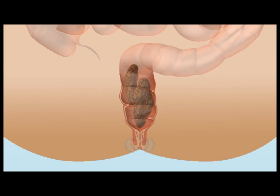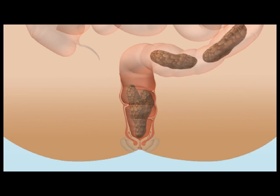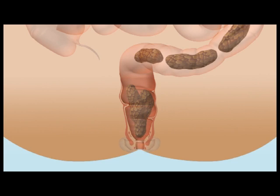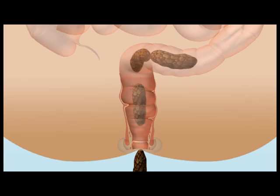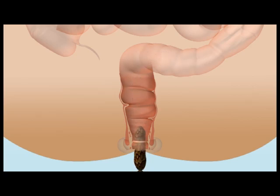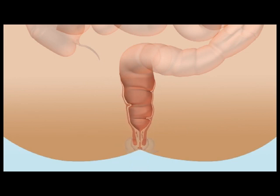At the same time, your internal sphincter relaxes by reflex and stool moves down towards the anus. When you are ready, you consciously allow the external sphincter to relax and stool is expelled. In between going to the toilet, both the internal and the external anal sphincter are contracted to keep you continent and to prevent leakage.